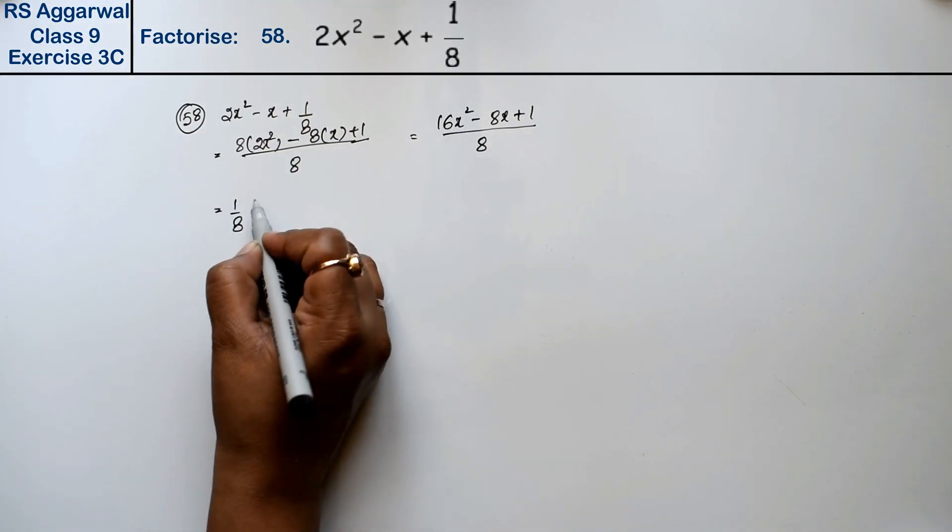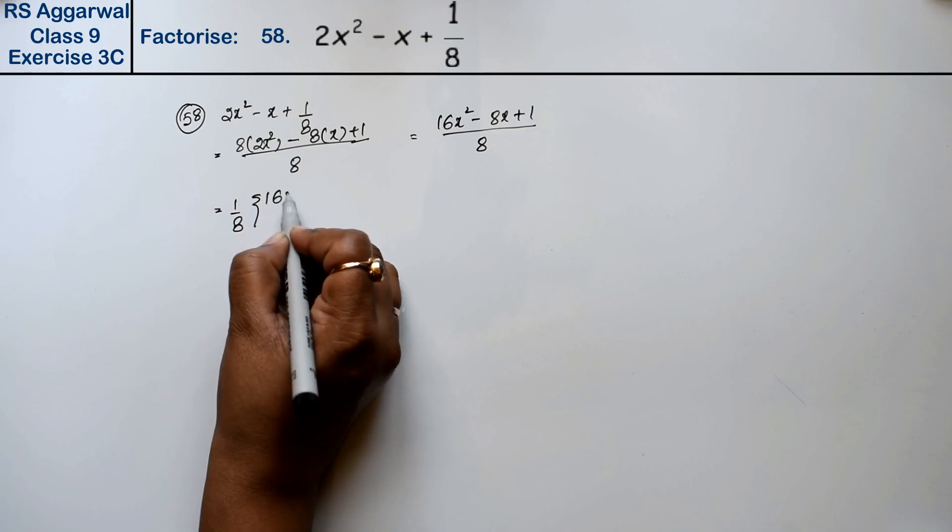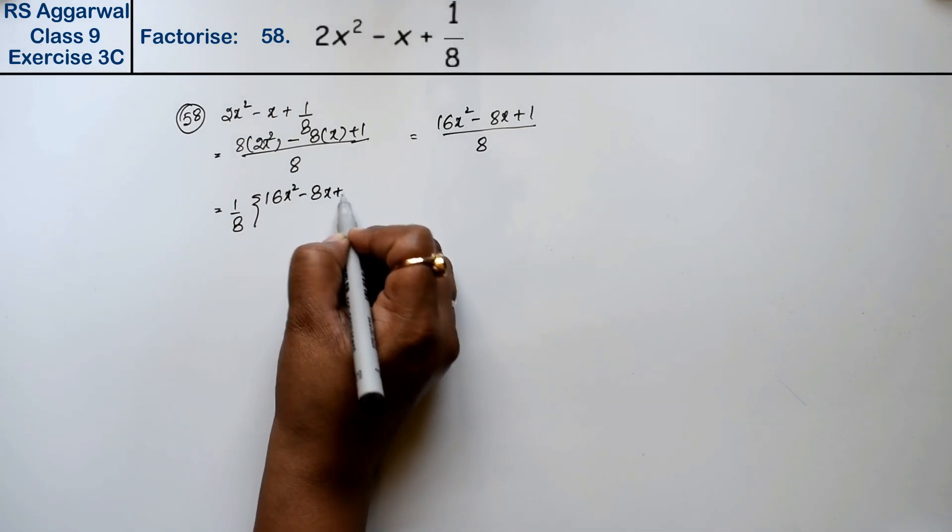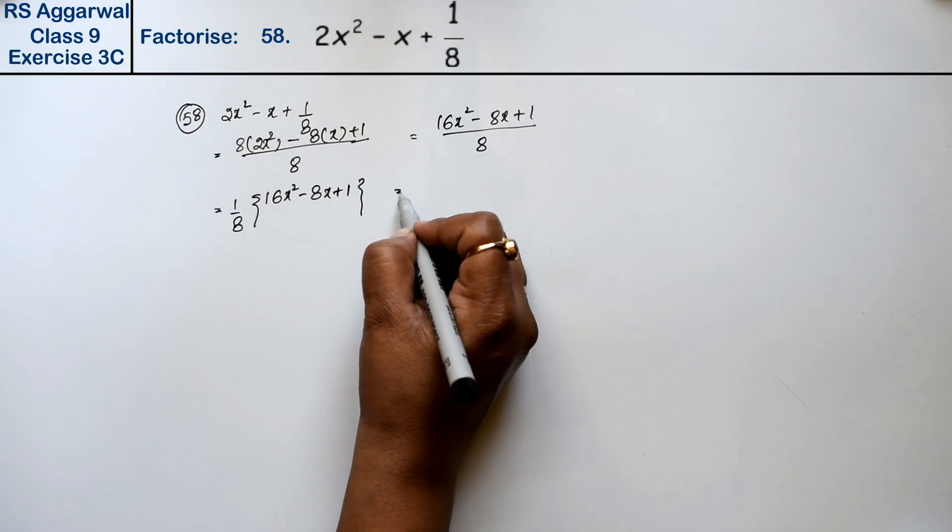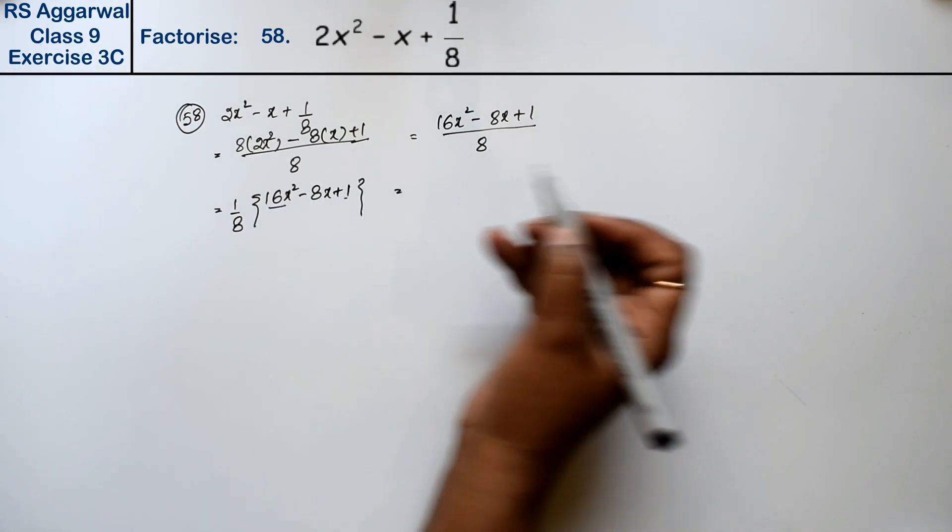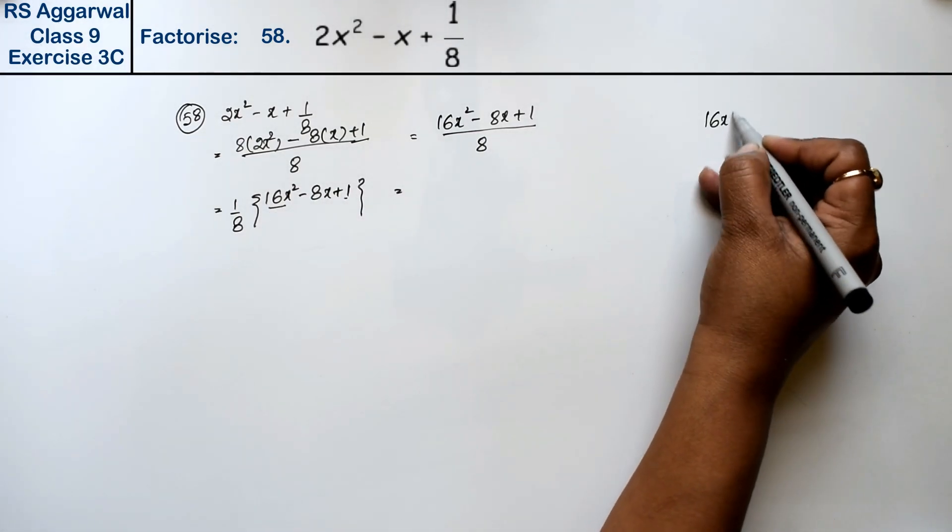Now 1/8 is common, so we're left with 16x² - 8x + 1. Now 16x² × 1 is 16x².